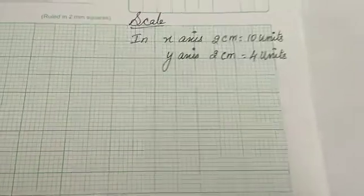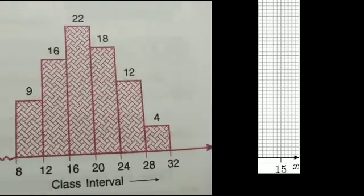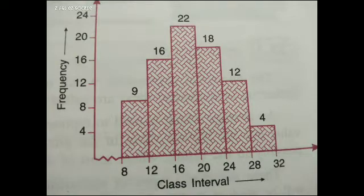Important points we have to keep in mind. First one: class interval should be in continuous group data form. For graph, scale is a must. Along x-axis class interval should be taken and along y-axis frequencies should be taken.